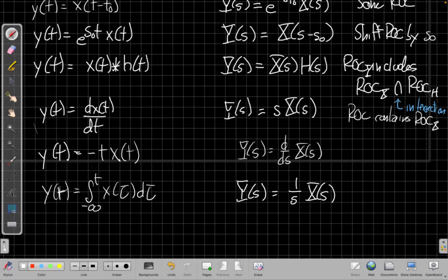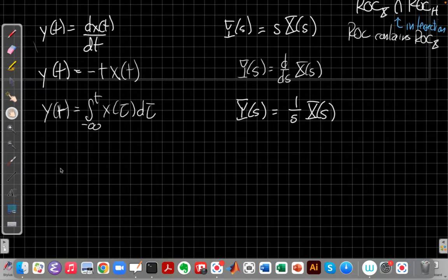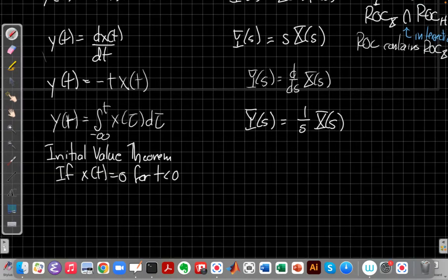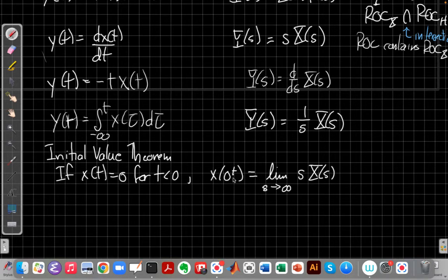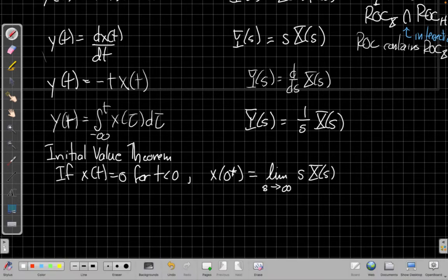And then one more we'll mention is what's sometimes called the initial value and final value theorems. So the initial value theorem says if x of t equals 0 for t less than 0, the value of x just after time 0, this is called 0 plus, this is a little plus sign, which means the instant, the first positive instant just on the positive side of 0, is the limit as s goes to infinity of s times x of s.